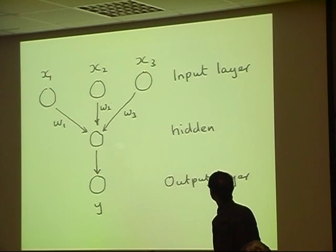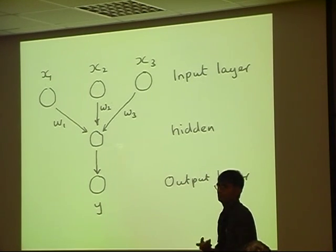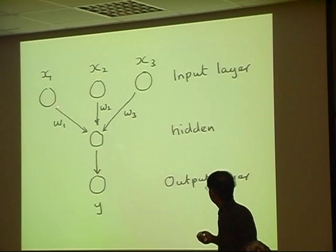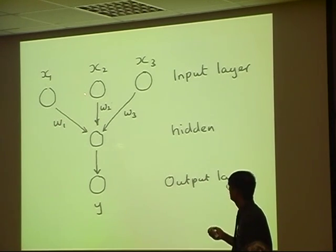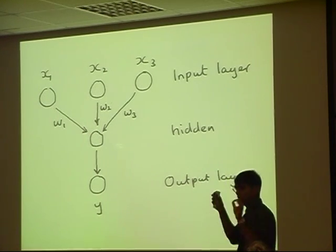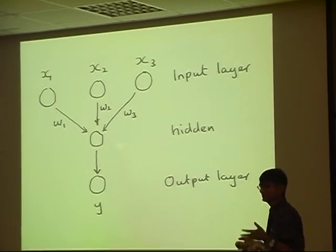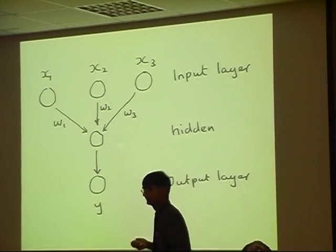And this is the yield strength. In neural network terminology, we call this the input layer because those are the input variables. And this is the output layer. I take the carbon, multiply it by a random number. I take the manganese, multiply it by another random number. And the silicon multiplied by another random number. Add them all up. And that calculation is done in what's known as a hidden layer. And I get the answer for the yield strength, which is not going to be correct because I've used random numbers here.